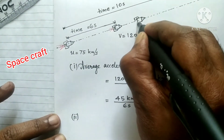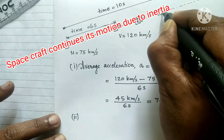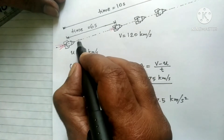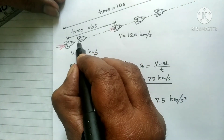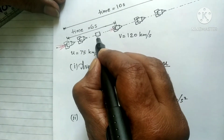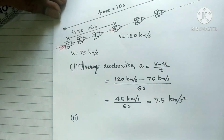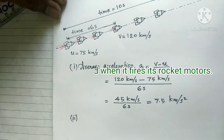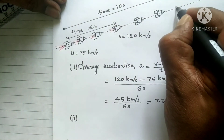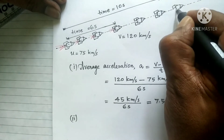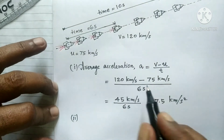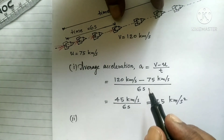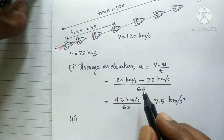After six seconds, the motor is not working, so the spacecraft is moving with uniform velocity — it covers equal distances in equal intervals of time. In the first six seconds, the spacecraft covered different distances in equal intervals of time because the motor was firing. So our work is to find the distance in the first six seconds plus the distance in the next four seconds to get the total 10 seconds.